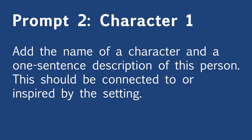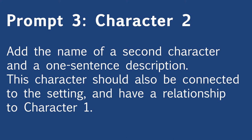If you're writing with somebody else, this is where you pass your paper to the next person. When you get somebody else's paper, read what they've written and add on to that play. The next prompt is to come up with a second character. They should also belong in the setting and have some kind of relationship to character one — either existing or one that develops in the play. Write the name of that character and a one sentence description of who they are.